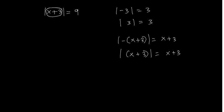Whenever we have a number inside the absolute value, we can take either a negative or positive sign for the expression inside. Both signs are applicable. So this gives us two branches. In the first branch, we take a positive sign for the expression inside the absolute value, giving us x plus 3 is equal to 9.